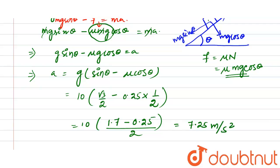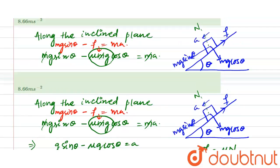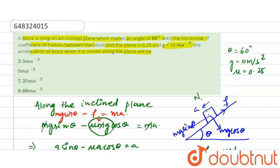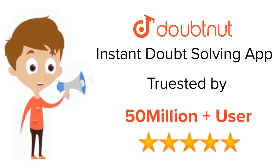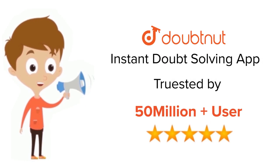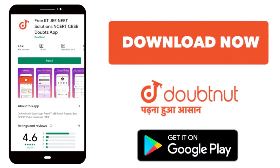This is the value of acceleration. Finally, the acceleration of the block when it moves along the plane will be 7.25 meter per second square. Option number 3 is correct. Thank you. For Class 6 to 12, IIT JEE and NEET level — trusted by more than 5 crore students. Download DoubtNut app today.